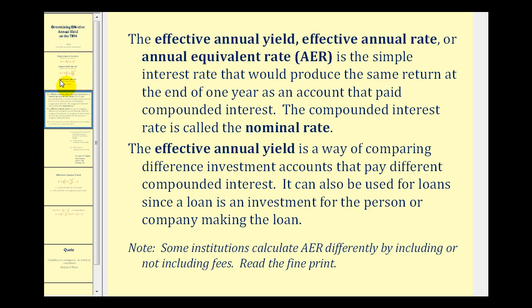The effective annual yield, also called the effective annual rate or annual equivalent rate, is the simple interest rate that would produce the same return at the end of one year as an account that paid compounded interest. The compounded interest rate is called the nominal rate.